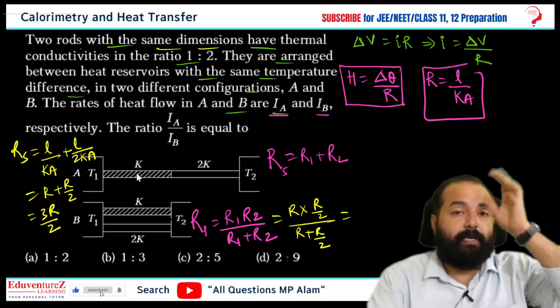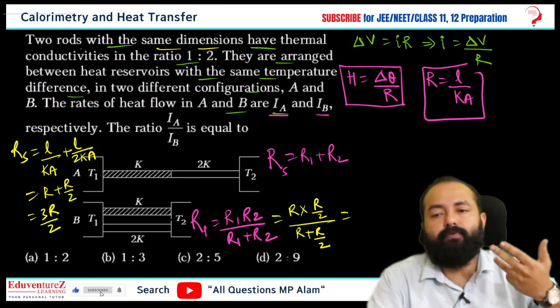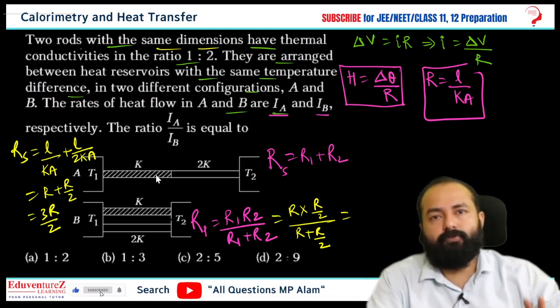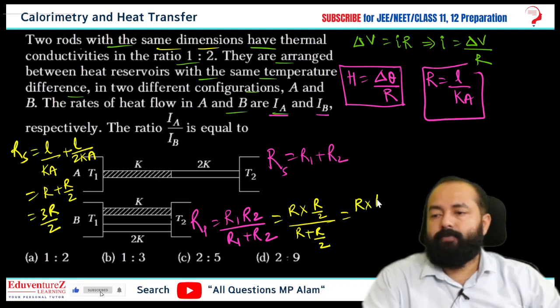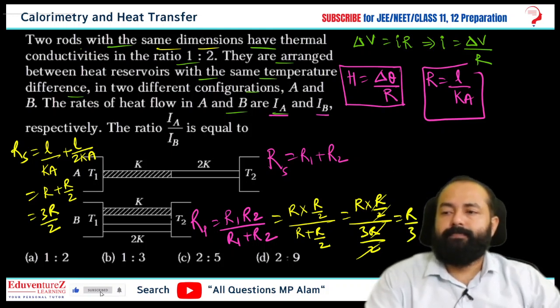Which is R to K, R into R by 2 is R into R by 2, and then 3R by 2, R by 2 cancel, then R by 3. Now the heat current at the two ends across temperature difference, the heat current or rate of flow of heat is inversely proportional to resistance.